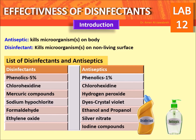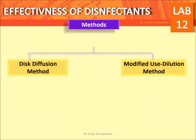Additional disinfectants include ethylene oxide. Antiseptics include: phenolics, one percent chlorhexidine, hydrogen peroxide, dyes, crystal violet, ethanol and propanol, and silver nitrate. Methods covered are the disk diffusion method and the modified use dilution method.